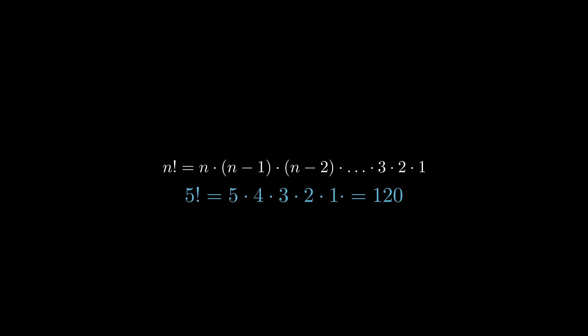Now, factorials of positive integers are easy enough to compute. For example, 5 factorial is just 5 times 4 times 3 times 2 times 1. Where things get a little bit more interesting is extending this definition to non-integers.